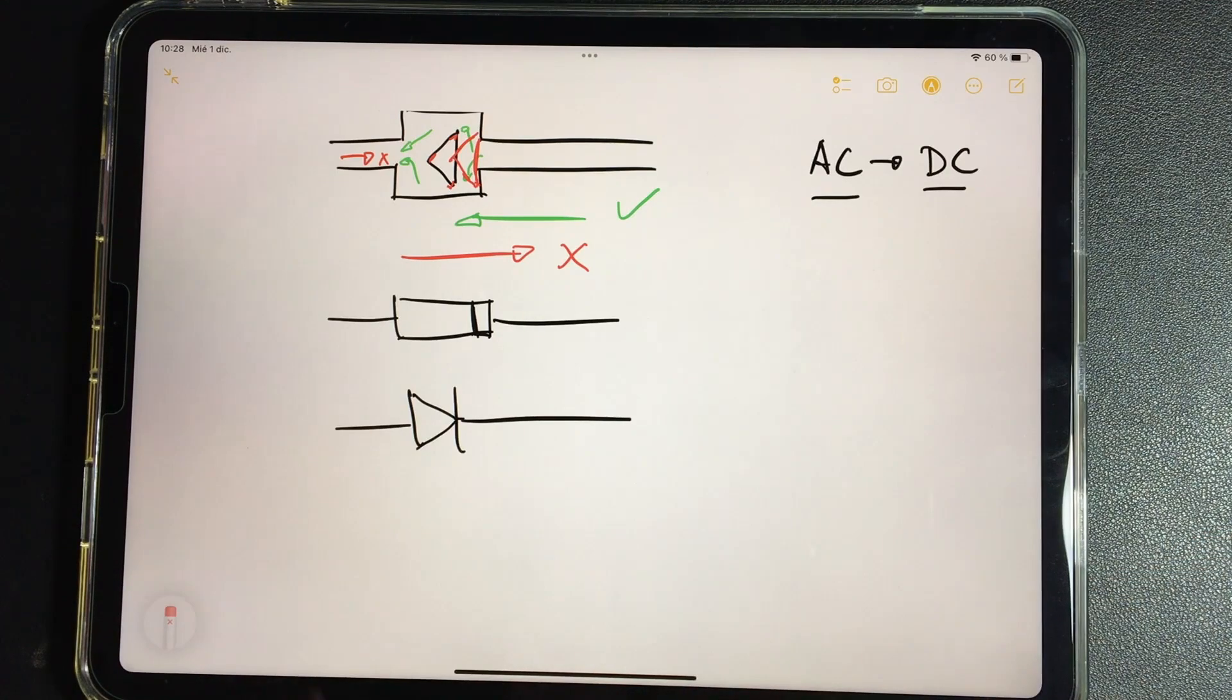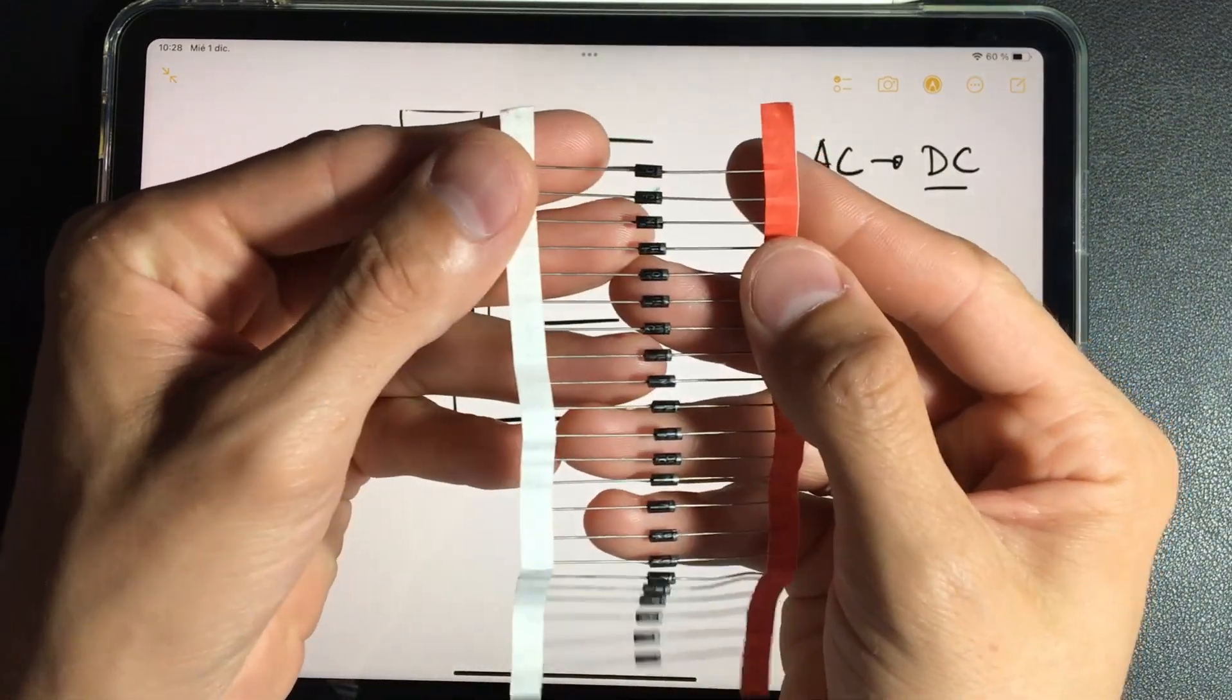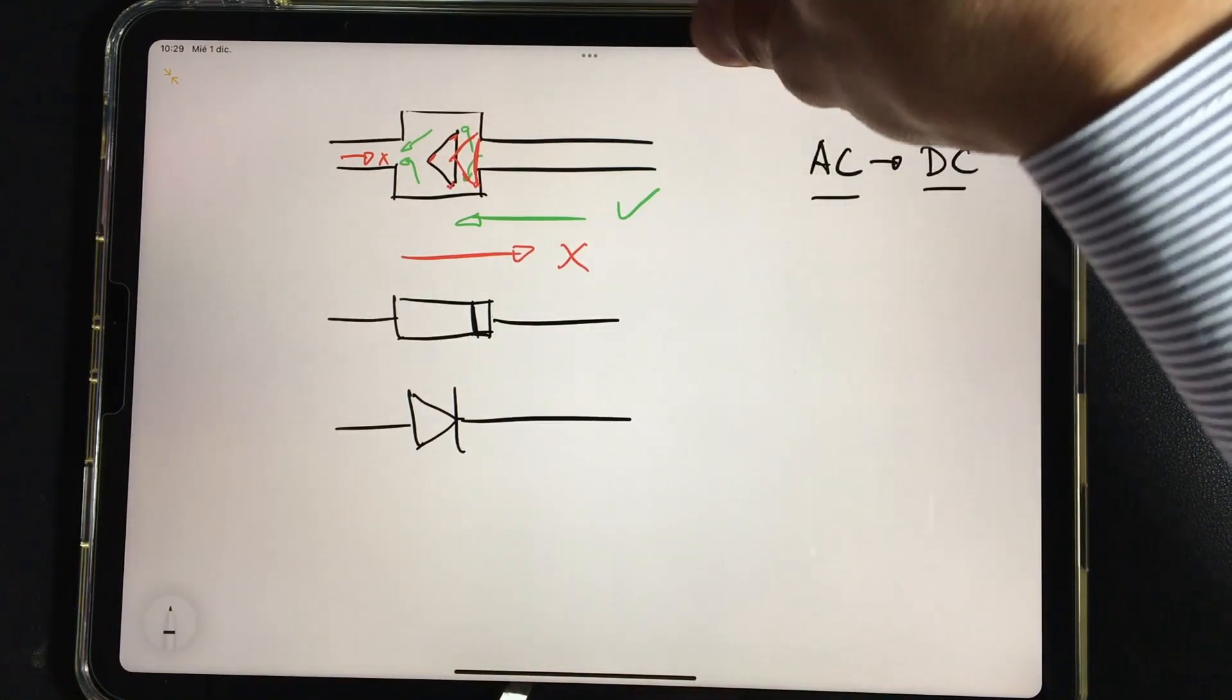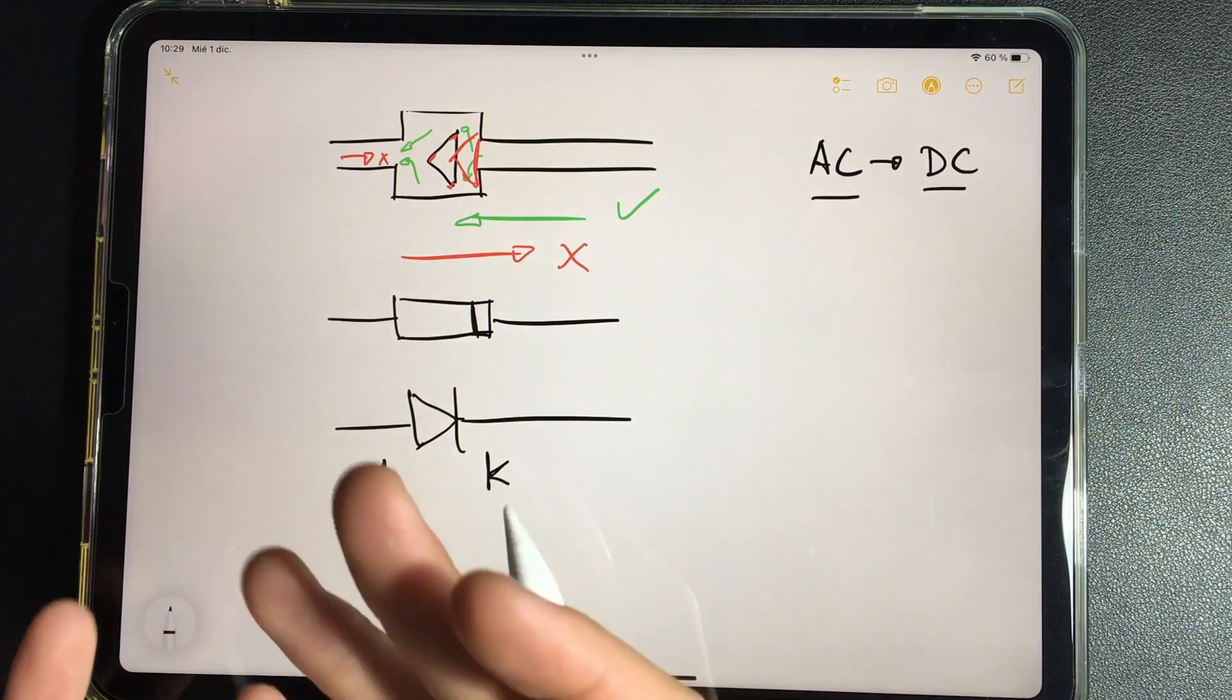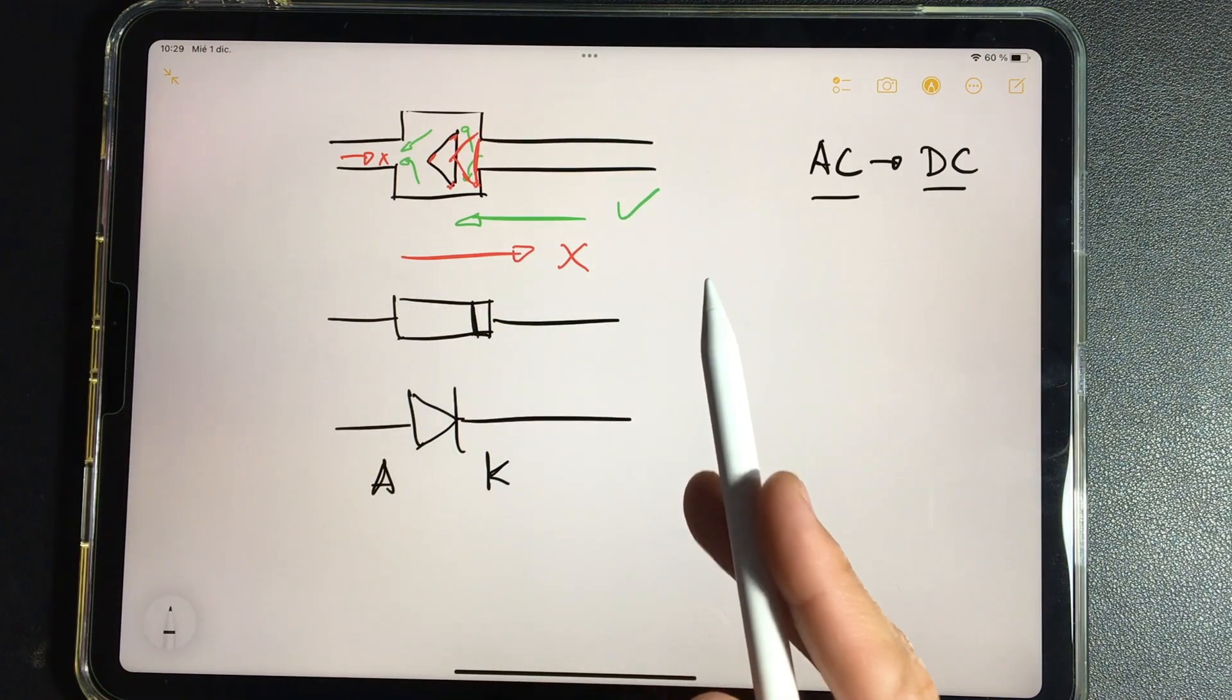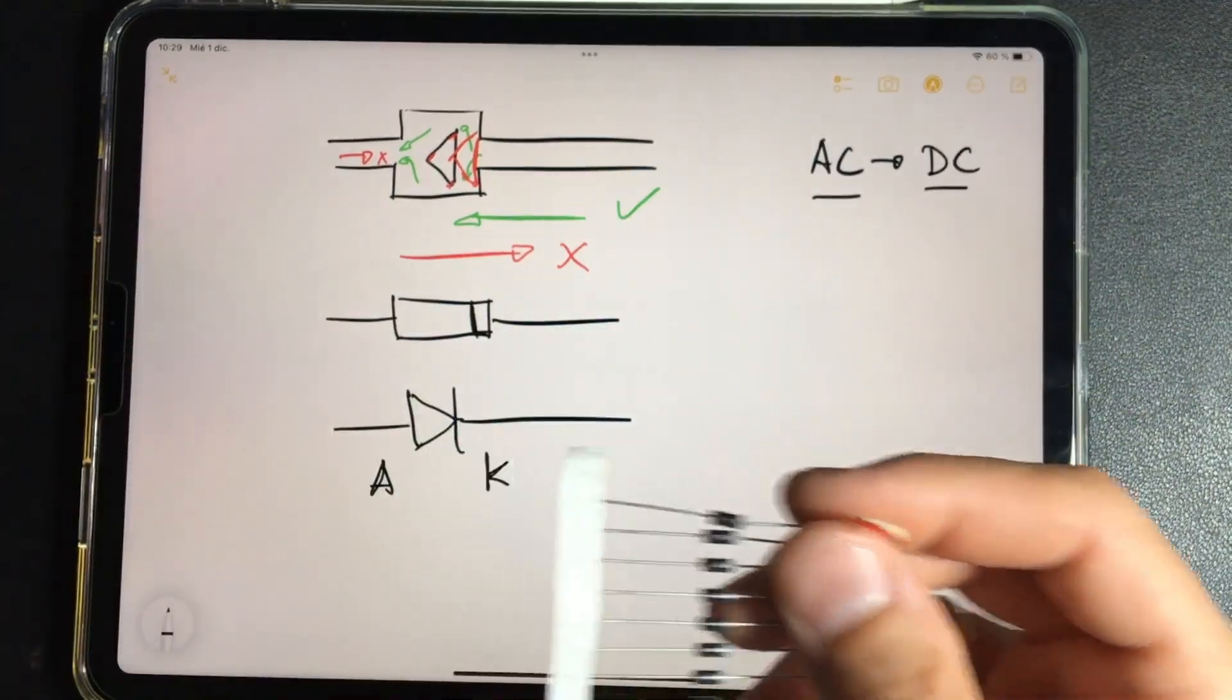I am going to show you in practice how these diodes work. We will always have these components located in this position. One more detail to take into account is that on this side we have the cathode and on this side we have the anode, so that you know what each side of the diode is called. If we inject electrons through the cathode, the electrons pass. If we inject electrons through the anode, the electrons do not pass. That is what we are going to do to test its correct functioning. I am going to run this. We are going to turn on the lights and do the measurement.